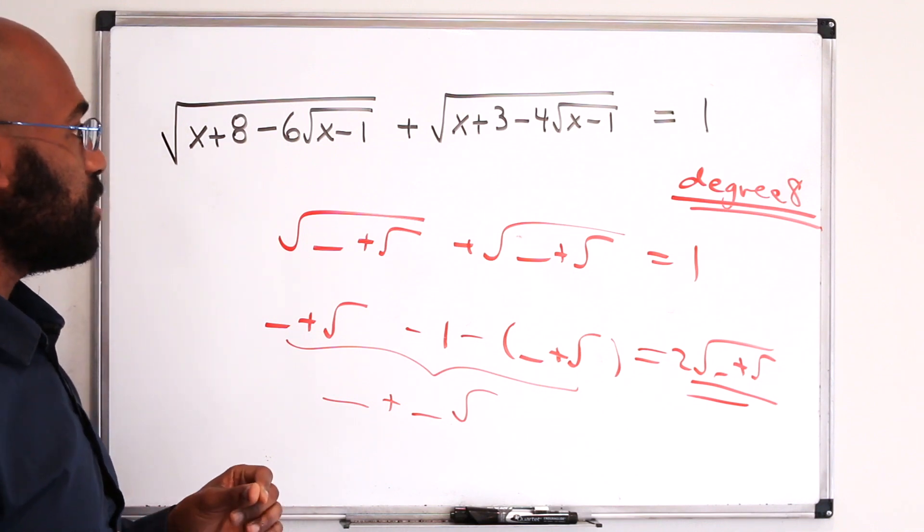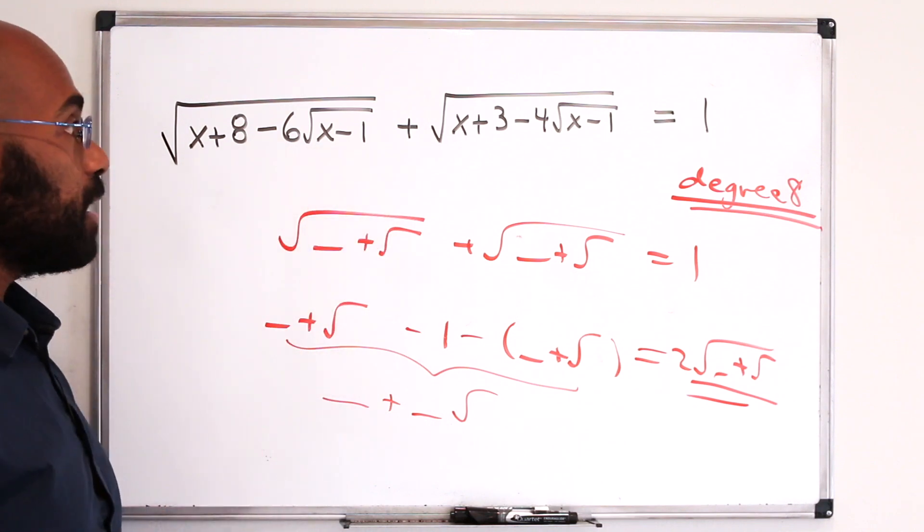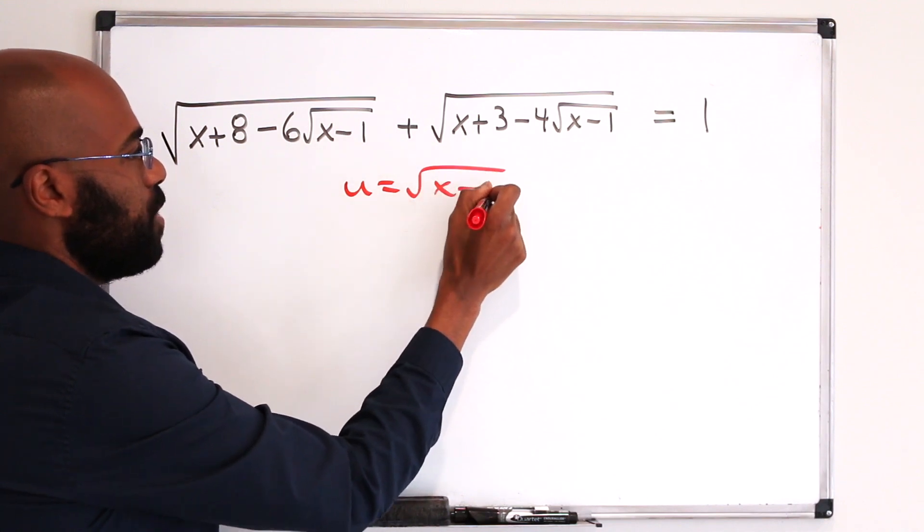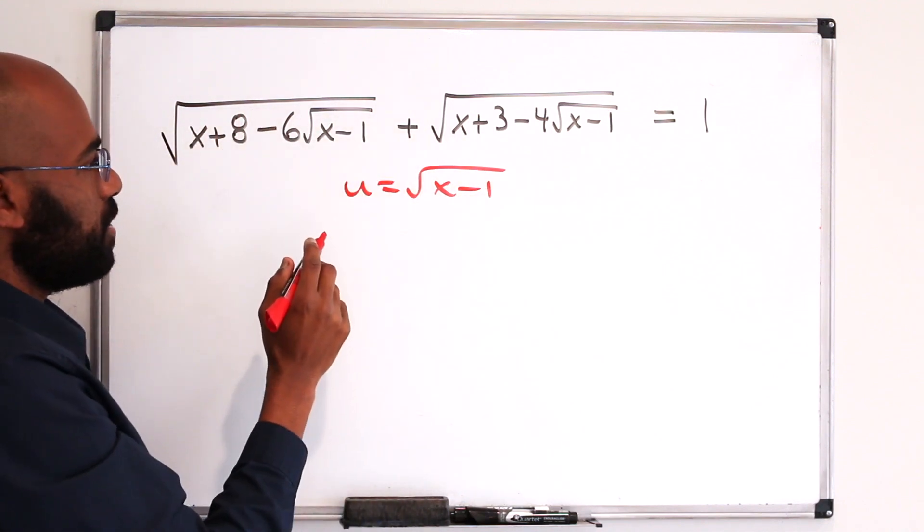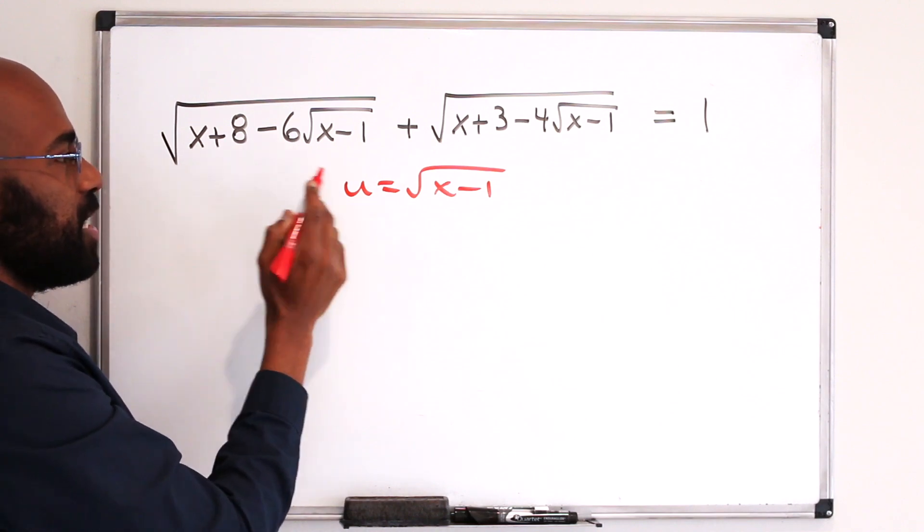So let's actually analyze the situation, substituting u for square root of x minus 1, and then seeing what happens. Alright, so u is the square root of x minus 1. So let's look at these quantities here. So we have a 6u here, then what is this quantity here? It's x plus 8.